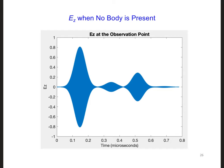Here is a plot of EZ at the observation point that I obtained when there's no body included in the model. This first peak corresponds to the initial wave propagating down to the snow.